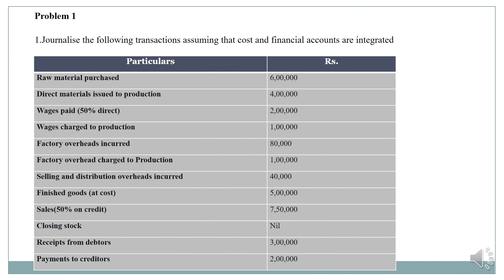This is the first problem: journalize the following transactions, assuming that cost and financial accounts are integrated. The first transaction is raw materials purchased — amount is 6 lakh rupees.